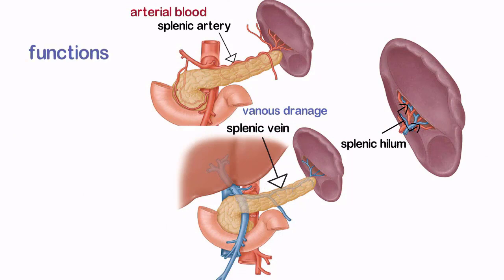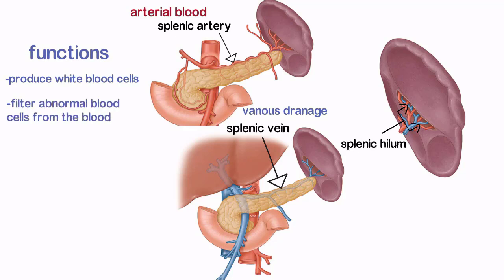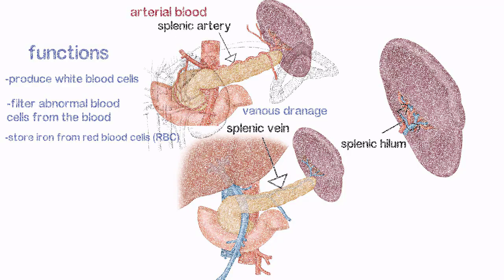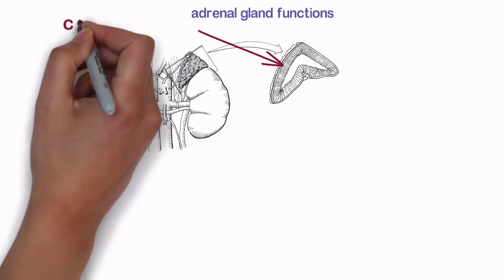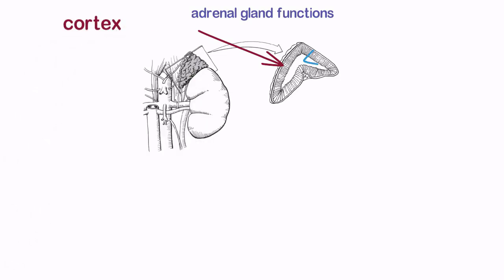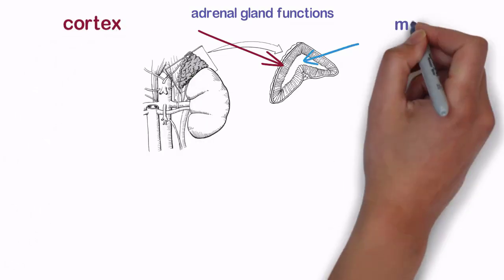The spleen is a highly vascular organ that functions to produce white blood cells, filter abnormal blood cells from the blood, and store iron from red blood cells. Each adrenal gland has an outer cortex and an inner medulla, which function independently.